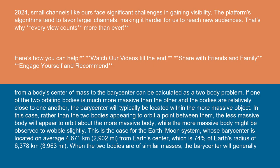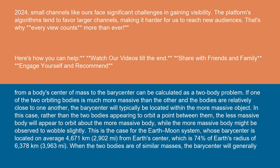The distance from a body's center of mass to the barycenter can be calculated as a two-body problem. If one of the two orbiting bodies is much more massive than the other and the bodies are relatively close to one another, the barycenter will typically be located within the more massive object.